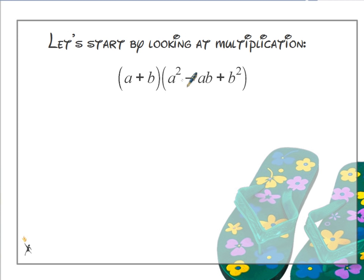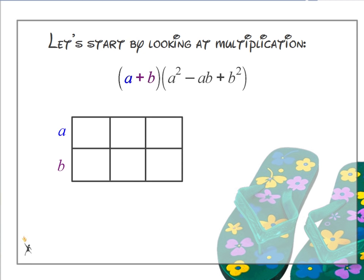We're going to multiply a plus b to a squared minus ab plus b squared. So we're going to set up our box. I'm going to put a plus b down one side, and my second polynomial a squared minus ab plus b squared across another side. Let's hurry and multiply those together.